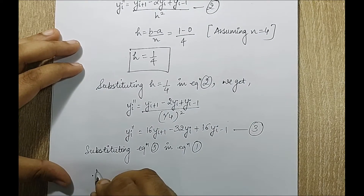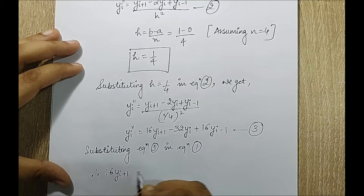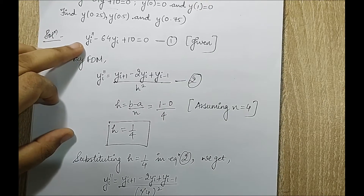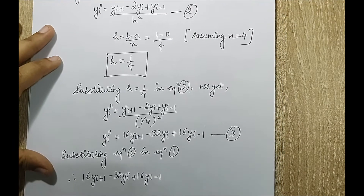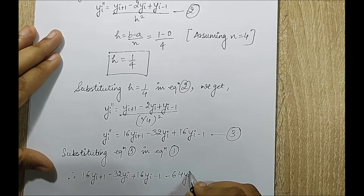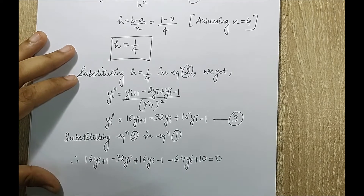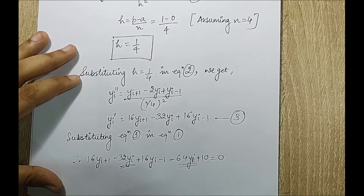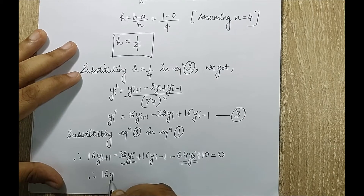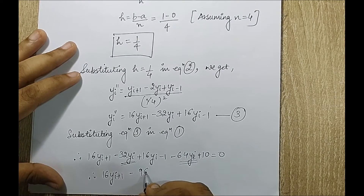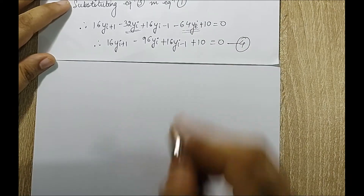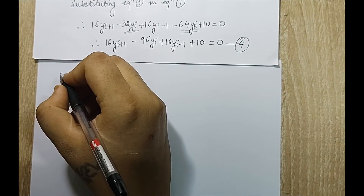Substituting equation 3 into equation 1, I get: 16y_{i+1} minus 32y_i plus 16y_{i-1} minus 64y_i plus 10 equals 0. The two y_i terms combine: minus 32 and minus 64 give minus 96y_i. Therefore: 16y_{i+1} minus 96y_i plus 16y_{i-1} plus 10 equals 0. This is equation number 4.